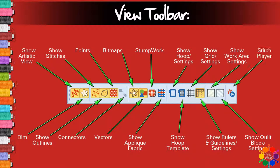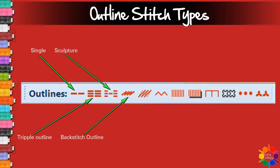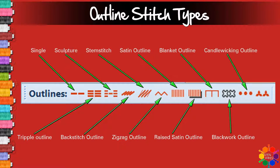Show quilt block, Stitch player. Outline stitch types: Single, Triple outline, Sculpture, Backstitch outline, Stem stitch, Zigzag outline, Satin outline, Raised satin outline, Blanket outline, Blackwork outline, Candlewick outline, Pattern run outline.